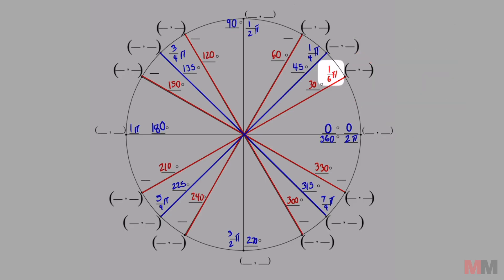One over six pi. Two over six simplifies to one-third pi. Three over six is a half. Four over six is the same as two-thirds pi. Five over six.